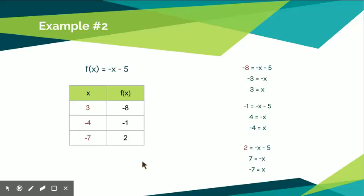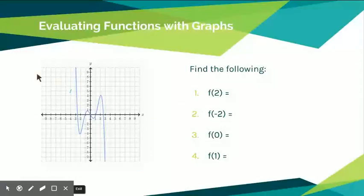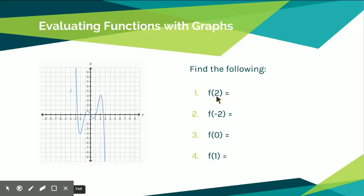With tables, the key is to identify whether you're inputting the x value or the f of x value. Now for my favorite — evaluating functions with graphs. It can look confusing at first, but once you get the hang of it, it's probably the easiest part of this lesson. Looking at this graph: find f of 2, f of negative 2, f of 0, and f of 1. Remember, f of x is y, so we're asking: what is the y value for each given x value?